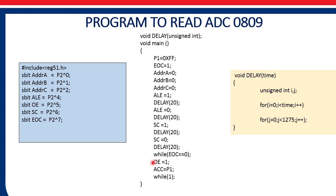We then make OE (output enable pin) equal to 1. After enabling the output pin, the converted data will be available on the output of the ADC, which is connected to port 1. So the next statement reads port 1: ACC equal to P1, meaning the contents of port 1 are copied to the accumulator. The last statement is while(1);, so this program will be executed only once and the ADC data will be read once and kept in the accumulator.